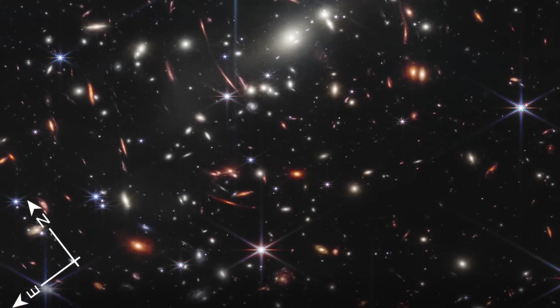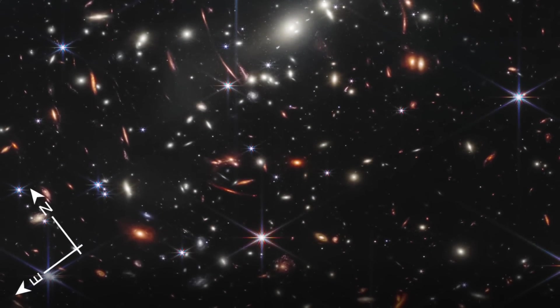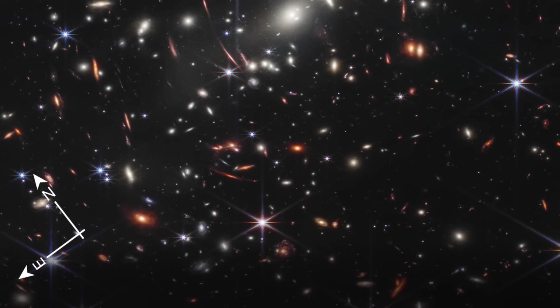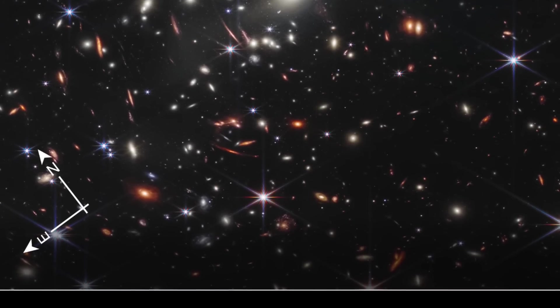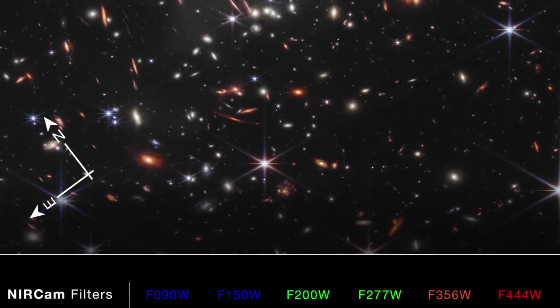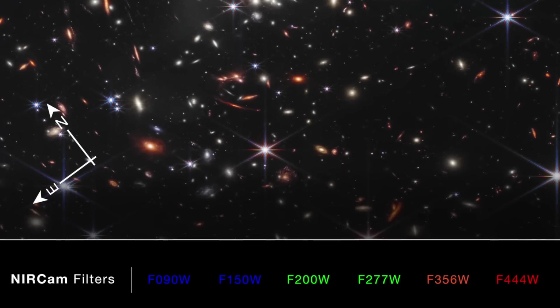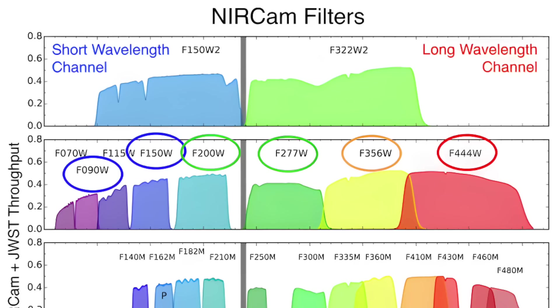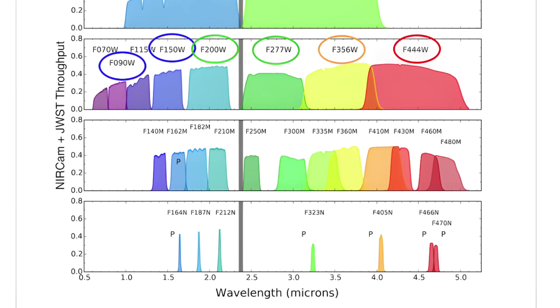Thirdly, humans cannot see the wavelengths of infrared light that were used to construct the image. Instead, colors in the visible range that we can see were assigned to the different filters and then combined to produce the composite image. The specified filters are circled in the assigned colors in the NASA graphic that you see on the screen. You can see that there is broad coverage in the range from 0.6 to 5 microns.